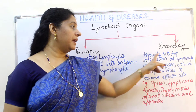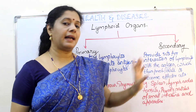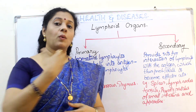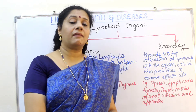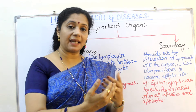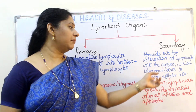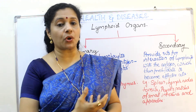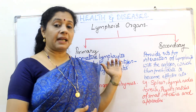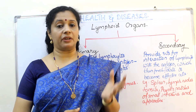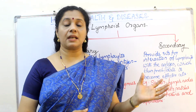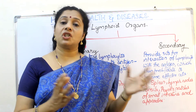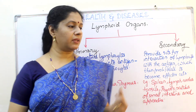Secondary lymphoid organs provide the site for interaction of lymphocytes with antigens. Though lymphocytes are antigen-specific after the primary lymphoid organs, once they reach the secondary lymphoid organs they get the opportunity to come face to face with antigens and bind with them, then proliferate to become effector cells capable of destroying antigens. Primary and secondary lymphoid organs are very important — exam questions often ask for the differences or ask you to identify which organs are primary and which are secondary.